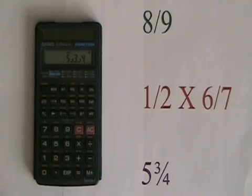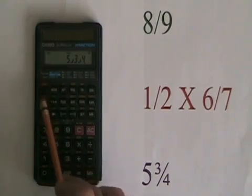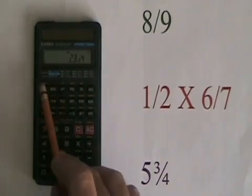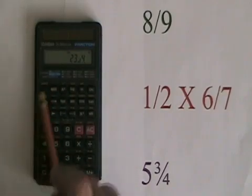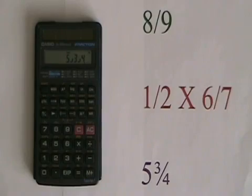We can convert between mixed number and improper fraction by doing shift ABC, and we can go back and forth between the improper fraction and the mixed number by doing shift ABC again as many times as we want.